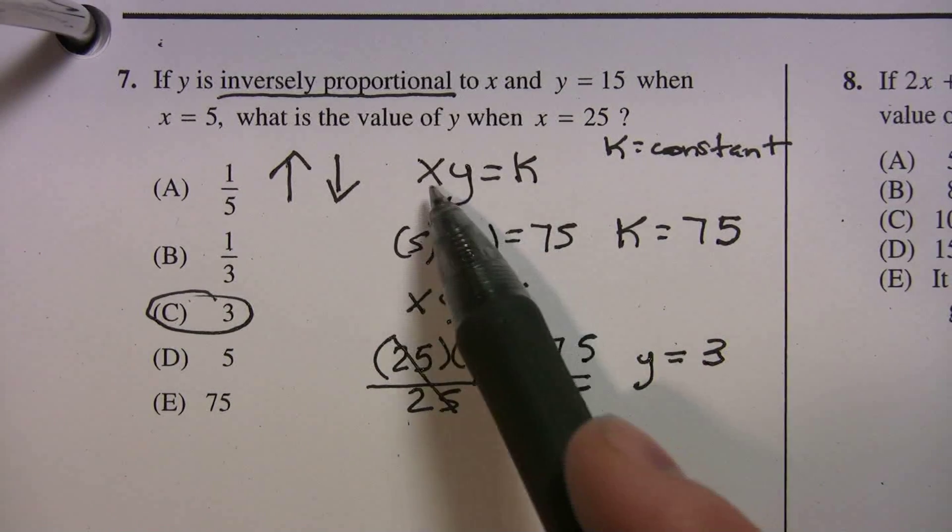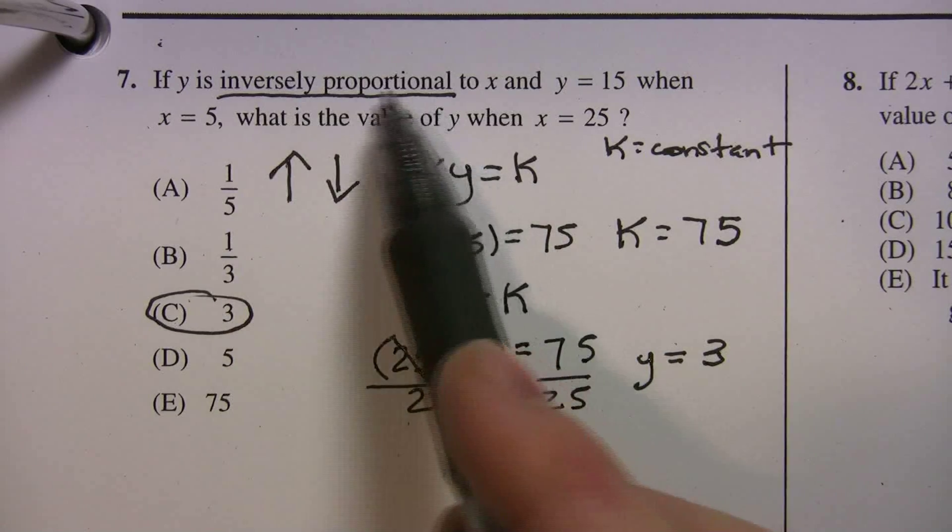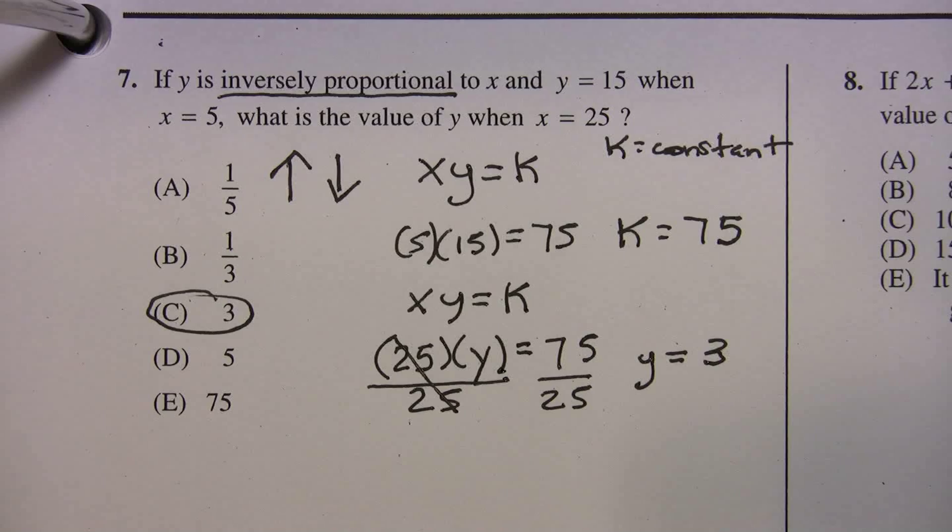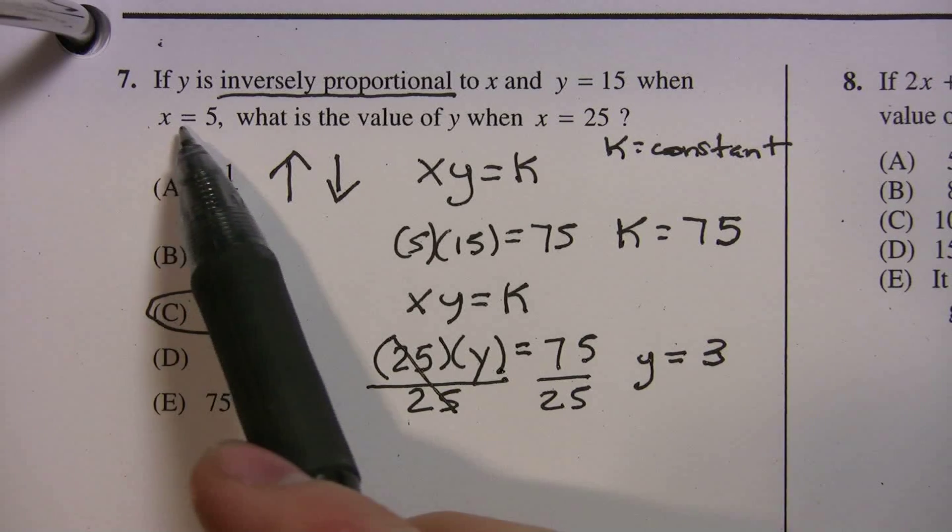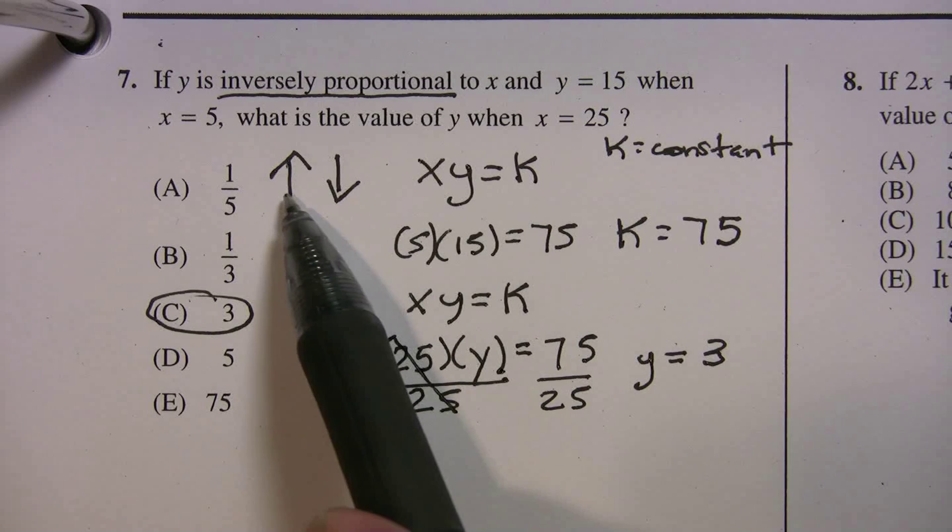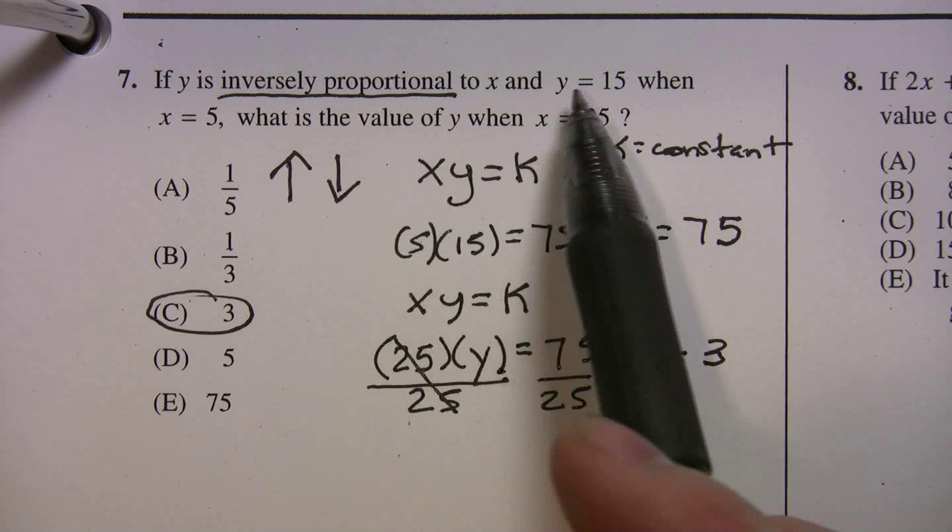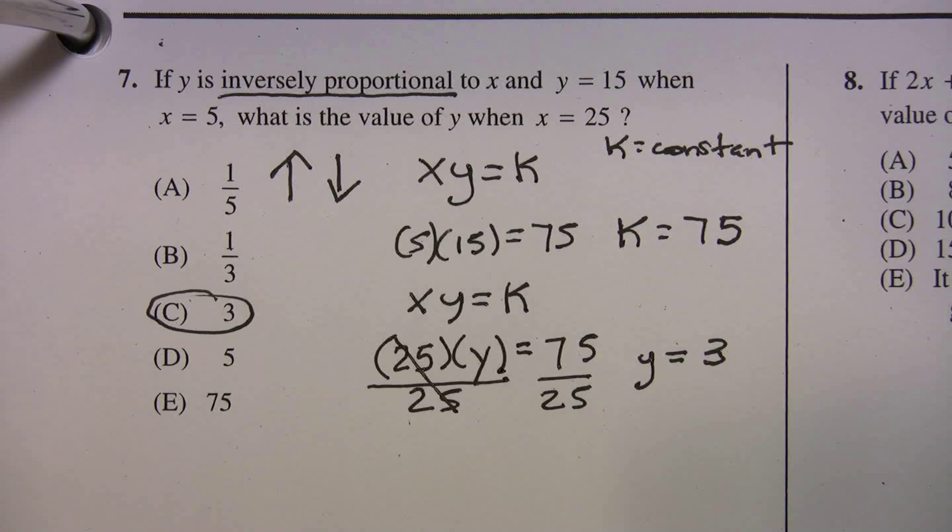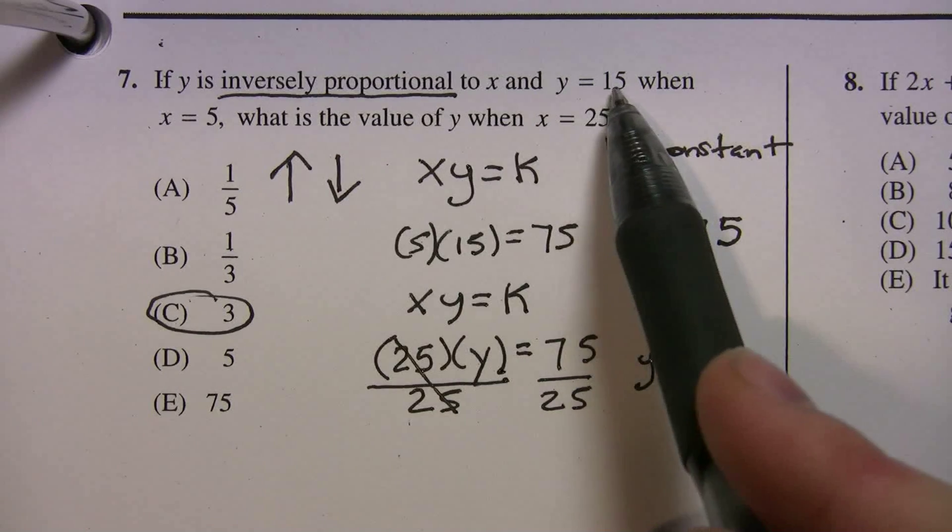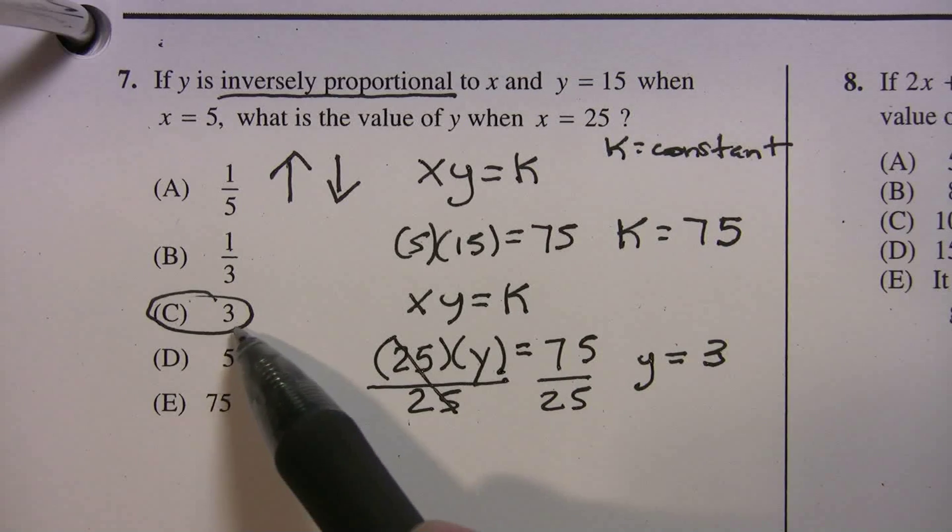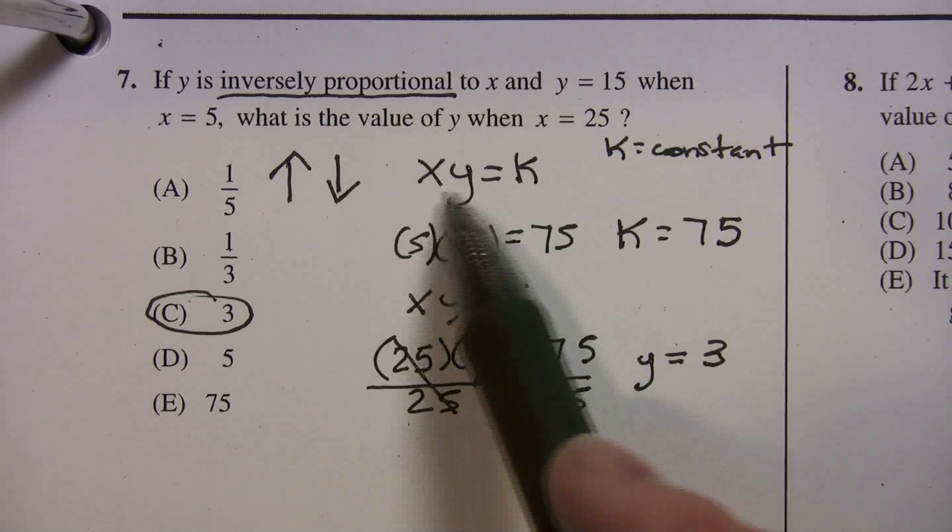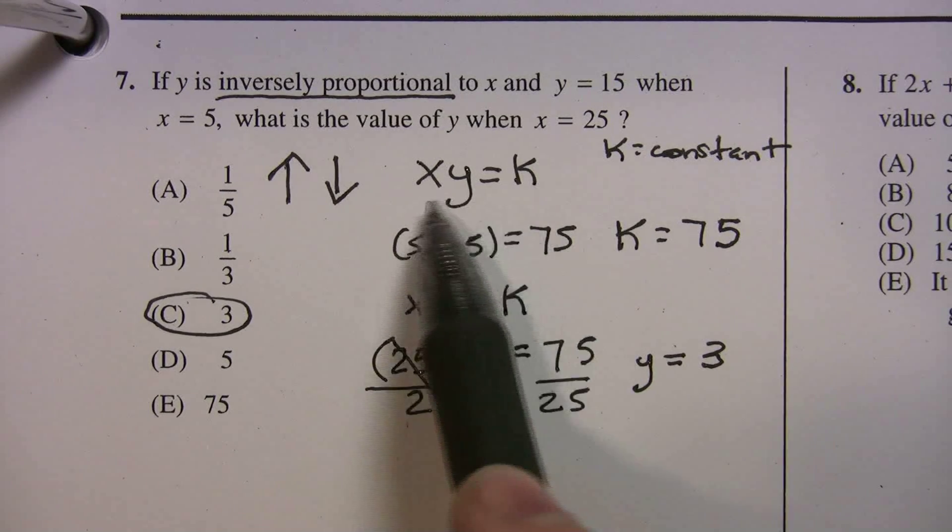So this is a really handy formula to know when you're dealing with inverse problems. Another way you can think about this problem is that x went from 5 to 25. So it went up by a factor of 5. That means that y has to go down by a factor of 5. So if it's going down by a factor of 5, 15 divided by 5 gives you 3. If that kind of thinking is too hard for you, or it just seems a little too foreign, just use the formula.